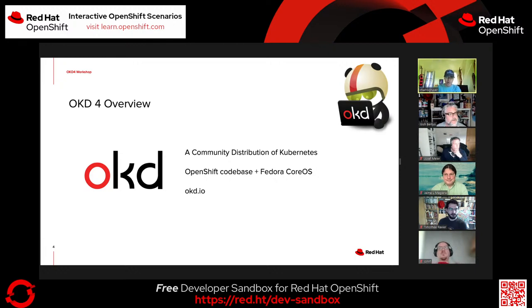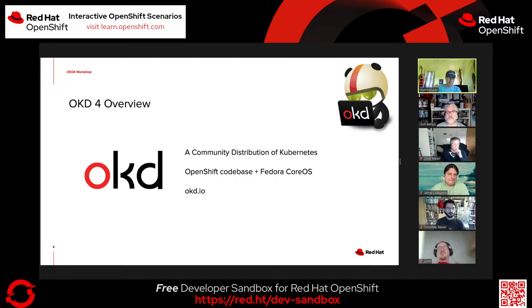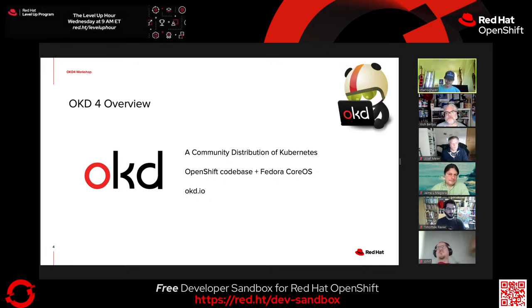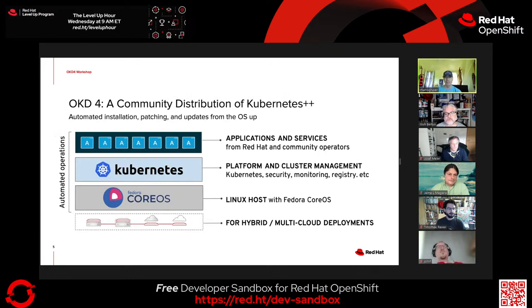OKD is also OpenShift. For Red Hat subscribers to OCP, the OpenShift Container Platform, the codebase of OKD is the exact same codebase as OpenShift. The difference is that where OCP sits on Red Hat CoreOS as its underlying OS, OKD uses the upstream component Fedora CoreOS.